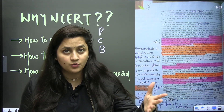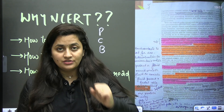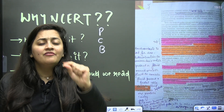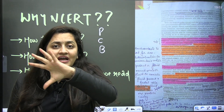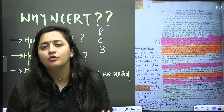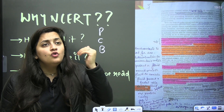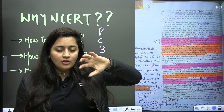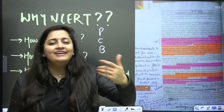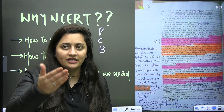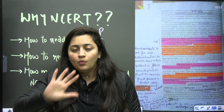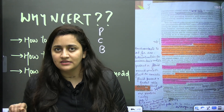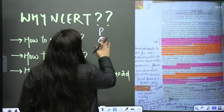For NEET aspirants who are preparing from last six months, one year, or two years — this is for you. When you read your NCERT, never ever highlight your book in the first reading. Why? Because you don't know the important topics, important concepts, or what to focus on and what to ignore. When you start reading a particular chapter, just read it once or twice, and then when you read it for the third time, start highlighting.